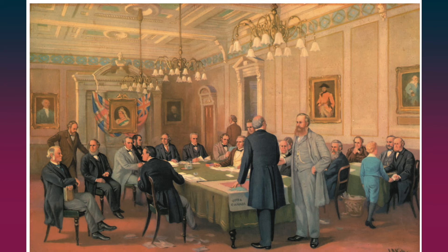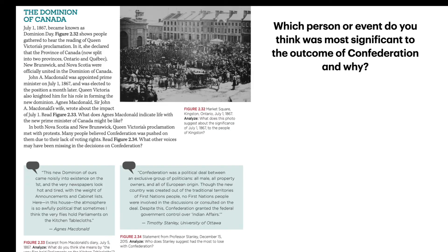On July 1st, 1867 — known as Dominion Day, now Canada Day — Queen Victoria's proclamation declared that the Province of Canada, now split into two provinces, Ontario and Quebec, along with New Brunswick and Nova Scotia, were officially united in the Dominion of Canada. John A. MacDonald was appointed Prime Minister on July 1st, 1867, and was elected to the position a month later.